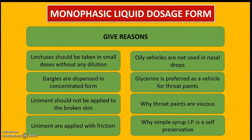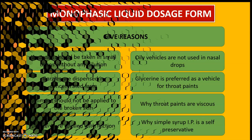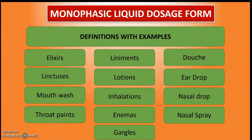There are a total of eight 'give reasons' questions in this chapter, important for theory and practicals. They are: (1) Linctus should be taken in small doses without dilution; (2) Gargles are dispensed in concentrated form; (3) Liniment should not be applied to broken skin; (4) Liniments are applied with friction; (5) Oily vehicles are not used in nasal drops; (6) Glycerine is preferred as a vehicle for throat paints; (7) Why throat paints are viscous; and (8) Why Syrup IP is self-preservative.